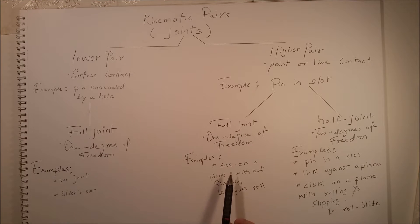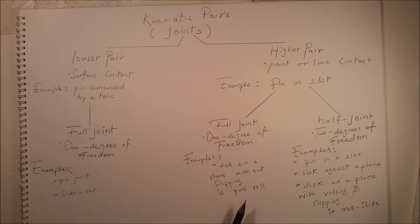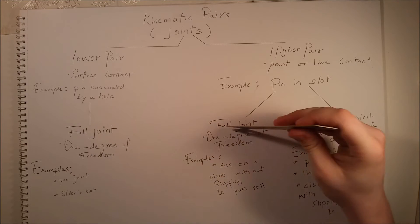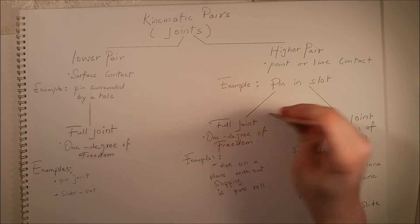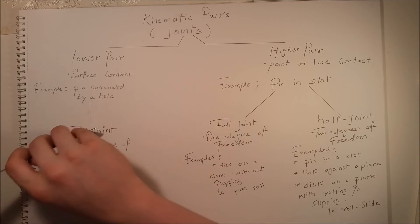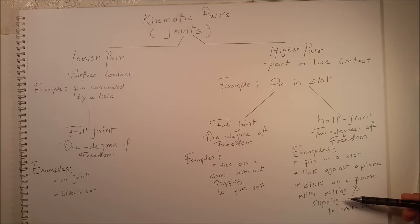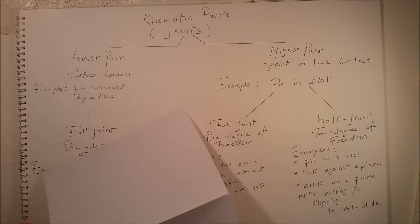For a full joint in the higher pair, an example is a disc on a plane without slipping. We have a full joint in the higher pair only when we have pure roll. A half joint describes two degrees of freedom. Examples include a pin in a slot, a link against a plane — where you can have both rotation and movement simultaneously — and a disc on a plane with rolling and slipping, which is a roll-slide example.